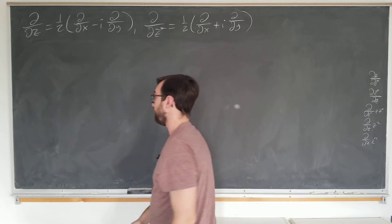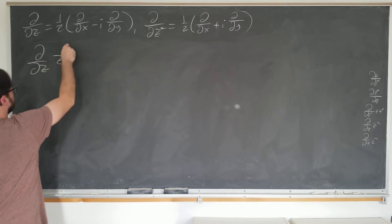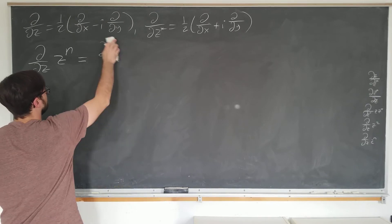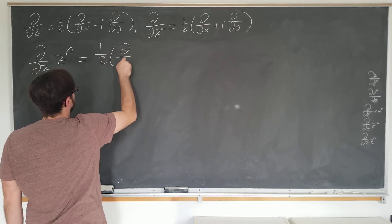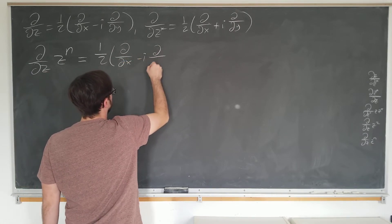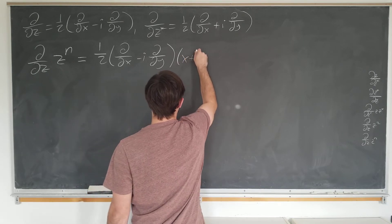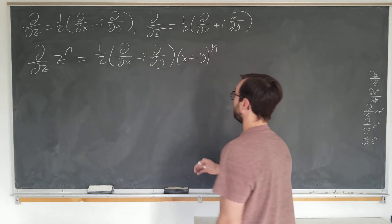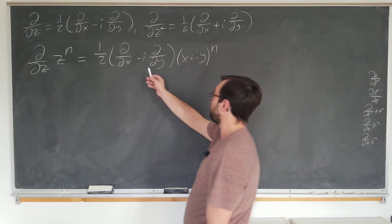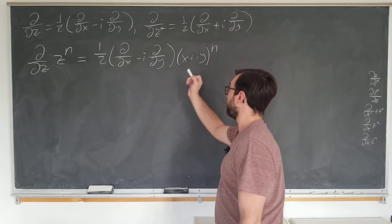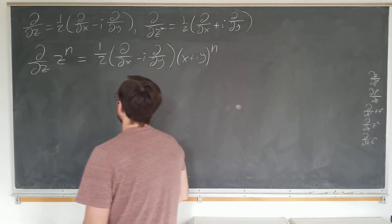All right, let's go ahead and proceed with d by dz of z to the n, which is just going to be one half d by dx minus i d by dy of z to the n, which is x plus i y to the n. Now instead of expanding this out by the binomial theorem, instead I'm going to distribute the differential operators to both of them and use the chain rule.